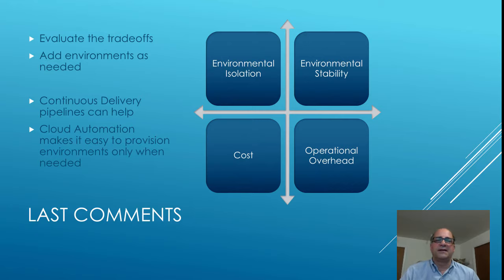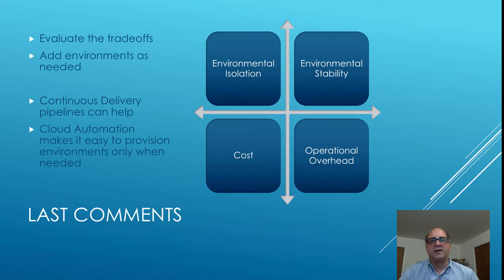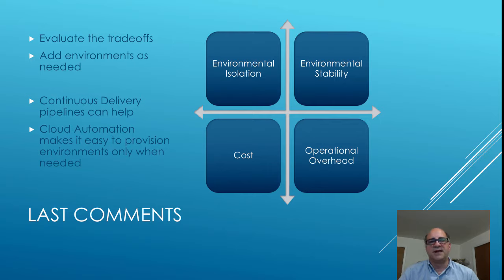The key trade-offs here: fewer environments means less work on the infrastructure side. More environments means better isolation for partner teams and environmental stability — you don't have to keep flipping an environment. I've seen situations where someone says 'we need to do a production check, let's turn QA into production-like,' which changes a bunch of things in that environment — pointing at a different database, that kind of thing. So you've got to evaluate the trade-offs based on what kind of processes your team has and what you really want to support.